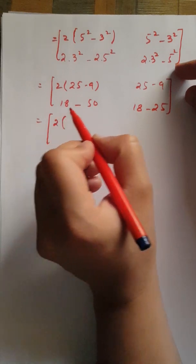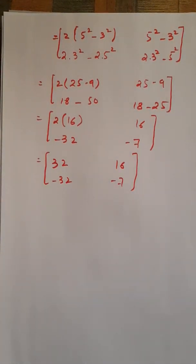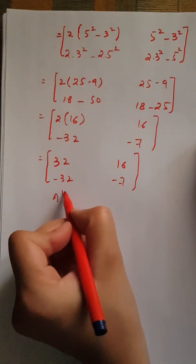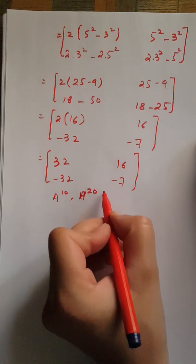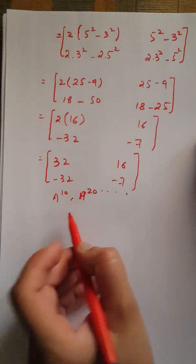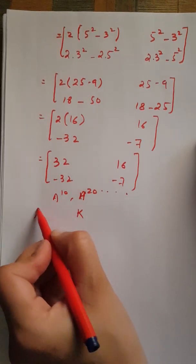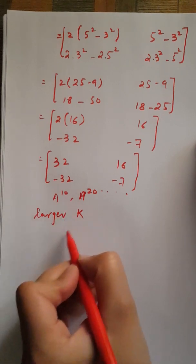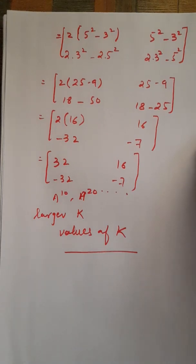Obviously, calculating A squared directly should be much easier compared to computing eigenvalues and finding its diagonal matrix. But what about when we're interested in determining A to the power 10 or 20 or even higher integers? This method is basically helpful when we're interested in larger values of k. Thank you for watching guys.